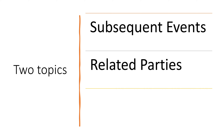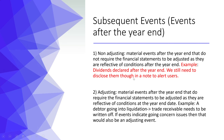Hi everyone. We're going to be looking at two topics that often come up in exam questions, which are subsequent events and related parties. The good thing about these — or the bad thing in some people's cases — is that there are no double entries to do; there are very minimal numerical adjustments.